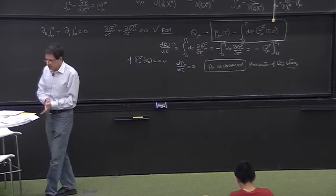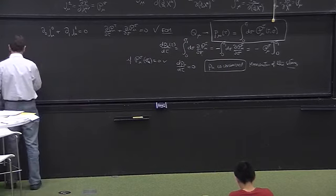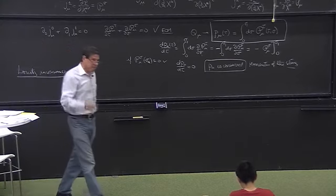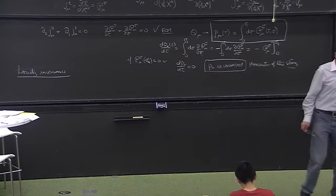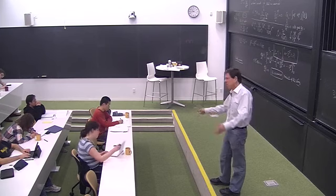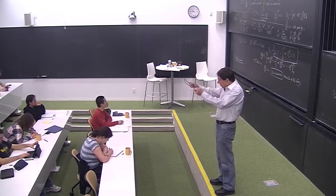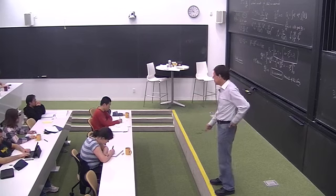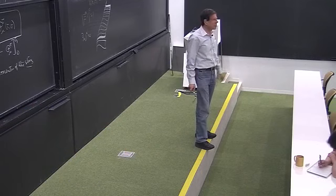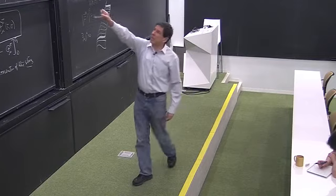There's one more symmetry we need to consider: Lorentz invariance. This is the symmetry we put in from the beginning — the theory is invariant under Lorentz transformations of the x's. So how do we derive a conserved thing associated with it?